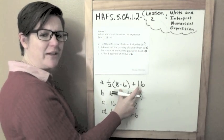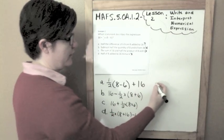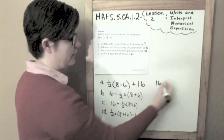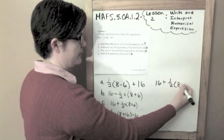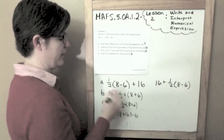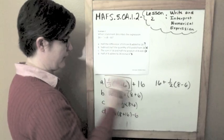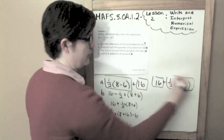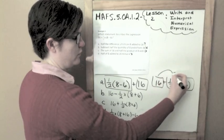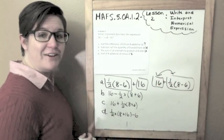And that's technically because of the commutative property. Because I could do 16 plus half of 8 minus 6, they're the same thing. We're adding these two things together, it's just flipped.